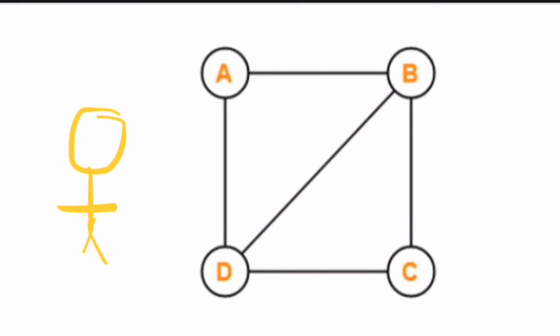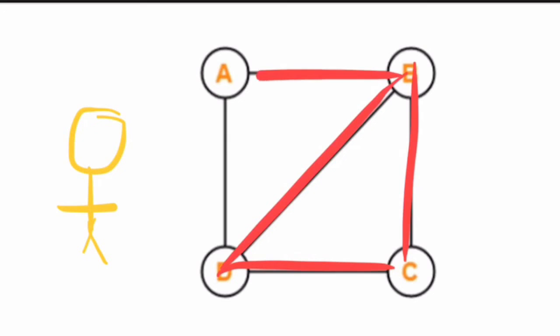If he begins at point B, going to point C, then D, B, and A, he will end up in point D. He will have visited the four roads, but he ended up at a different spot, so we can conclude that he didn't travel a Euler Circuit, but rather a Euler Path.